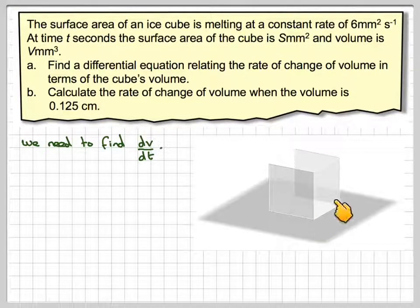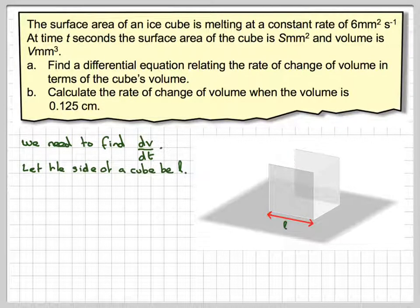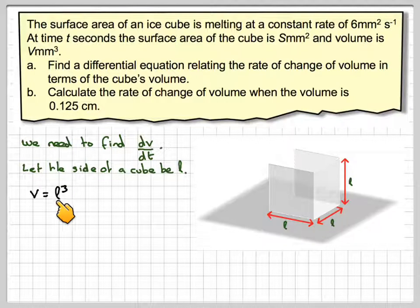Here's our cube. What we're going to need to do is introduce a variable. In a question like this, you need to draw a diagram. Let the side of a cube be L. So this is L, and this is L, and this will be L.